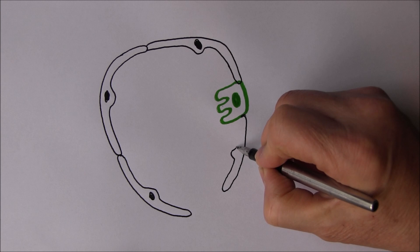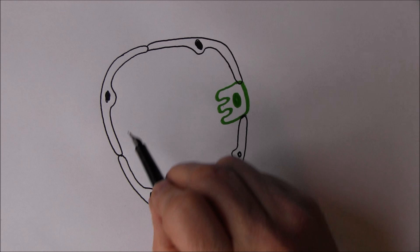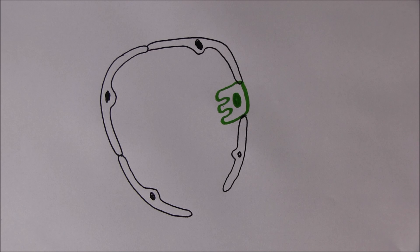The junctions between all these cells in the alveoli are relatively tight junctions - the cells are quite close together because we don't want too much transfer of fluid between them.